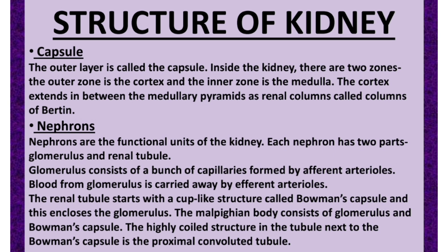The cortex extends between the medullary pyramids as renal columns, called columns of Bertin. The functional units of the kidney are nephrons. Each nephron has two parts: the glomerulus and the renal tubule. The glomerulus consists of a bunch of capillaries, and blood from the glomerulus is carried away by the efferent arterioles.